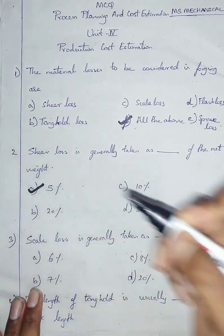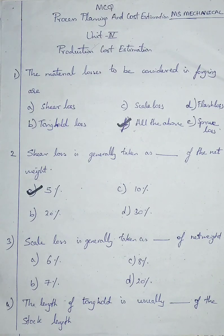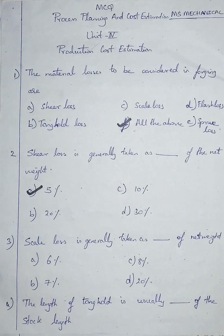Scale loss is generally taken as dash of the net weight. Option A: six percent, option B: seven percent, option C: eight percent, option D: twenty percent. Scale loss is generally taken as six percent of the net weight.